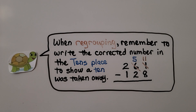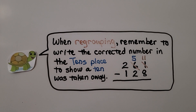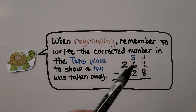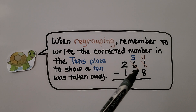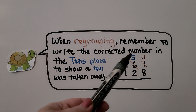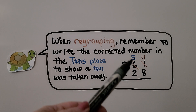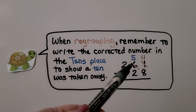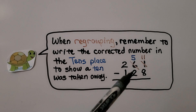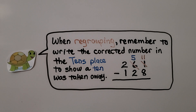And when regrouping, remember to write the corrected number in the tens place to show a ten was taken away. When we take a ten away from the tens place, we need to cross off the number and write the corrected number of tens so we don't make a mistake — if we forget, we might do six minus two instead of five minus two. Even for the ones place, it's very important that you write the corrected number so you don't make a mistake when subtracting.